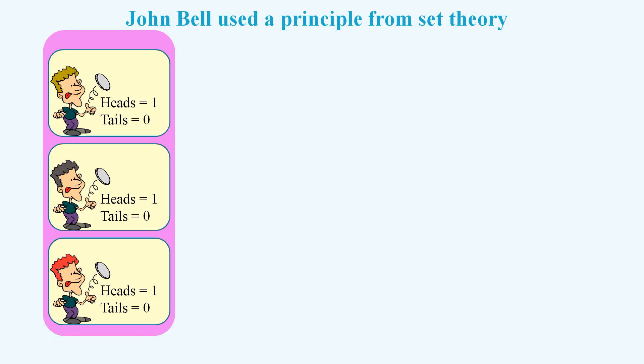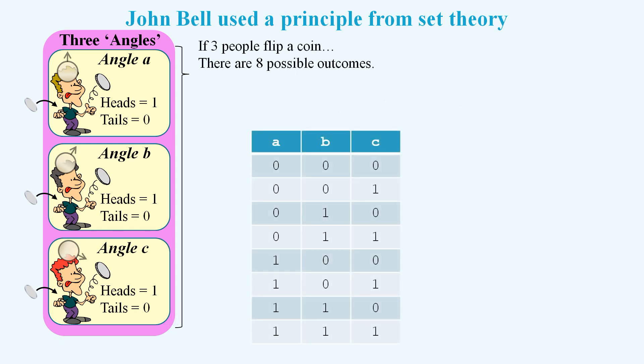Instead of photons, consider a stream of coins being passed to three people who then flip the coins. Let's call these three people angles. The first person is a particular angle that we'll call angle A, the second person is a slightly different angle that we'll call angle B, the third's another angle that we'll call angle C. Now if all three people flip a coin at the same time, there are eight possible outcomes. Note that we denote heads as one and tails as zero. So zero zero zero means they all flip tails, and one one one means they all flipped heads. If the three people keep flipping coins, then each result will always be one of these eight rows.